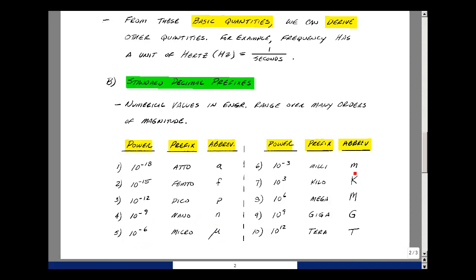10 to the minus 3 is milli, small m. 10 to the 3 is kilo, capital K. 10 to the sixth is mega, capital M. 10 to the ninth is giga, capital G. And 10 to the 12th is tera, capital T. There are more above this and below this, but these are the main 10 that we'll be using. I do expect you to be able to use these in the course.